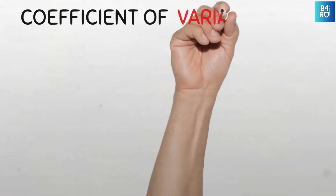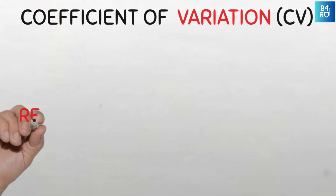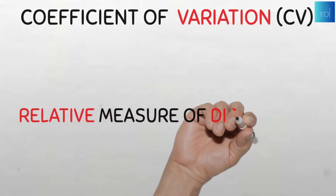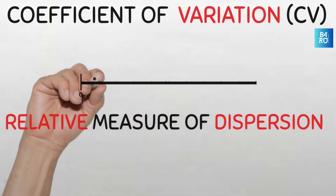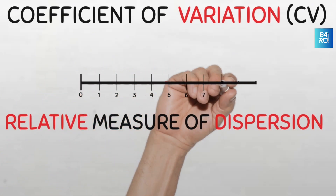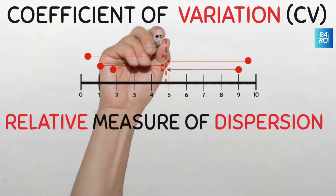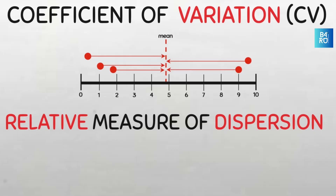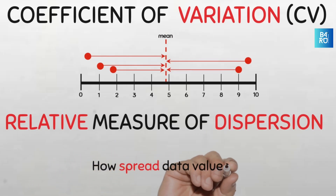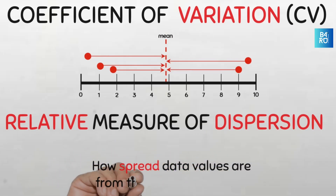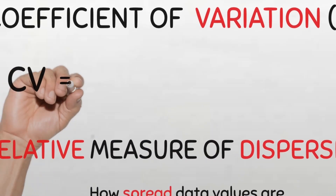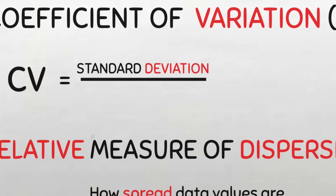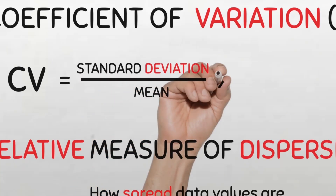The coefficient of variation is a relative measure of dispersion that explains the variability of a set of data around its mean. Assuming these are five points in a data set represented on a number line, the coefficient of variation is a measure that tells us how dispersed or spread out these data points are from the mean of the data. It is simply defined as the ratio of the standard deviation to the mean and it is often expressed as a percentage.